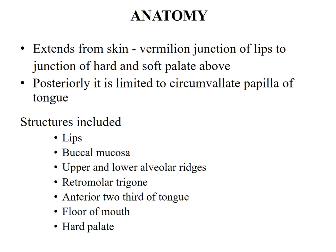The anatomy of the oral cavity. The oral cavity extends from the skin-vermilion junction of the lips to the junction of hard and soft palate above. Posteriorly, it is limited to the circumvallate papillae of the tongue. The structures included in the oral cavity are the lips, buccal mucosa, upper and lower alveolar edges, retromolar trigone, anterior two-thirds of the tongue, floor of mouth, and hard palate.